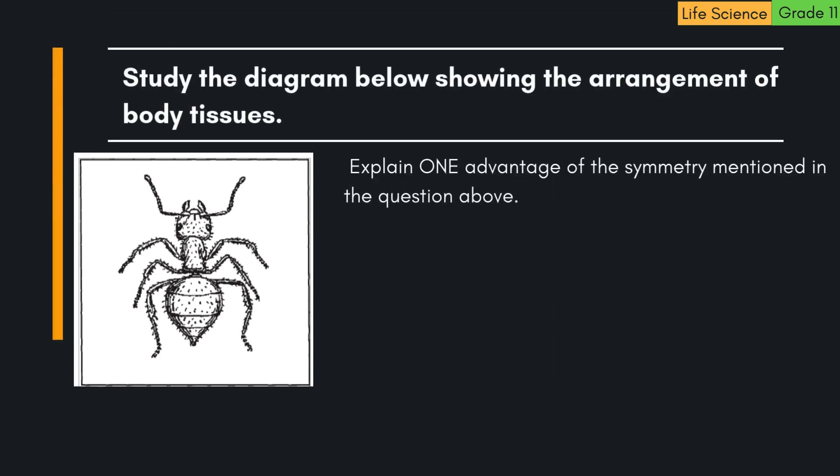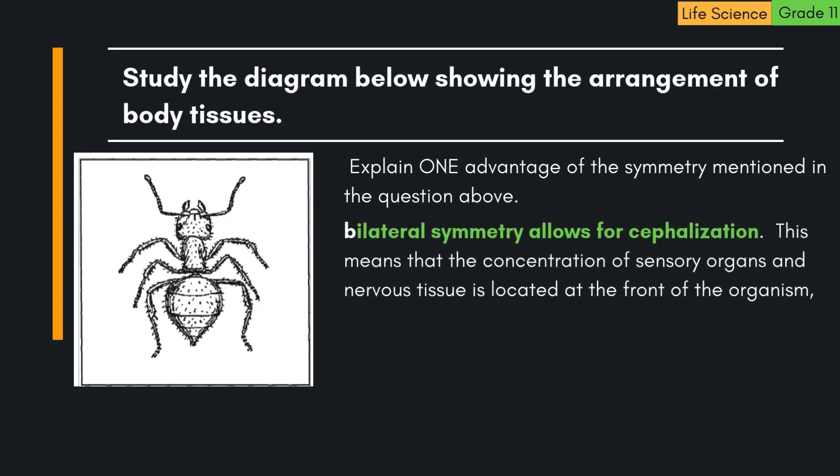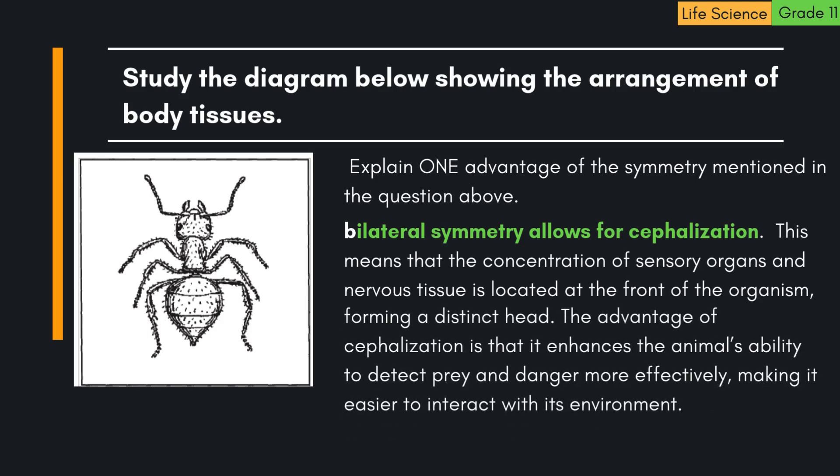Explain one advantage of bilateral symmetry. Bilateral symmetry allows for cephalization — the concentration of sensory organs and nervous tissue at the front of the organism, forming a distinct head. The advantage of cephalization is that it enhances the animal's ability to detect prey and danger more effectively, making it easier to interact with its environment.